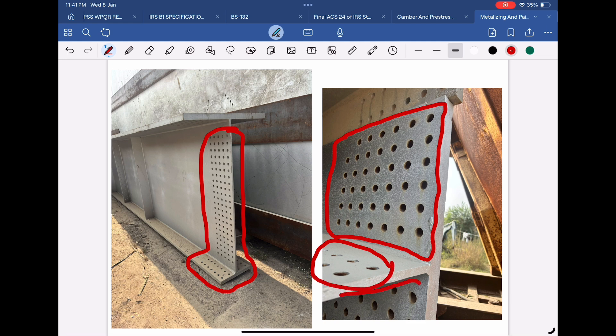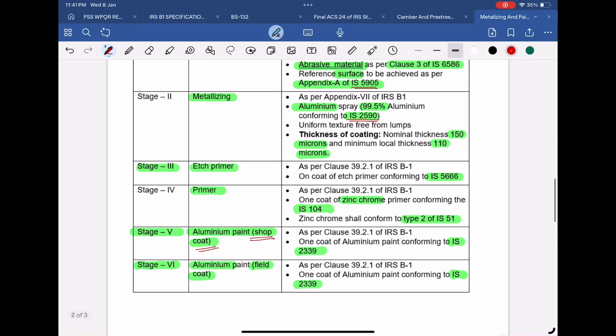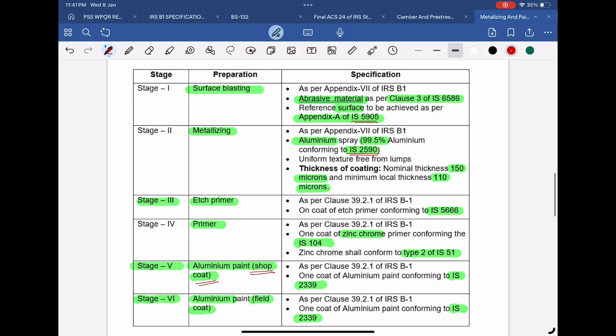This is a common mistake done by fabricators. Inspecting officials should invariably check and see that this provision is adhered to. Otherwise, it will be difficult to achieve proper friction grip between steel plies at a joint. This was all about the surface preparation and painting scheme adopted by Indian Railways in steel girders.